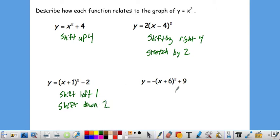If you want to go ahead and pause the video and try this one out, there are 3 transformations. Let's see if you can get all 3. Okay, we'll start with our left and right shifts. We have x plus 6, so this is a shift left 6. We're adding 9 at the end, so that's a shift up 9.